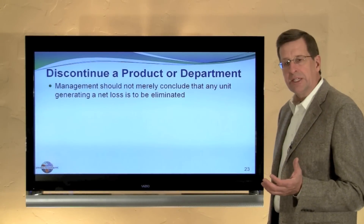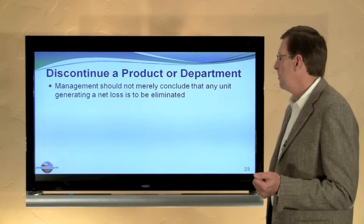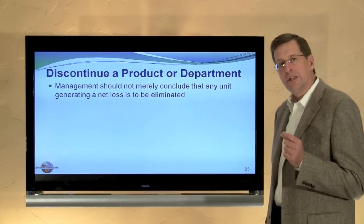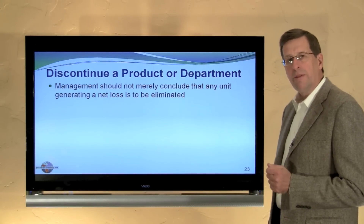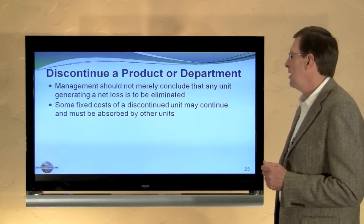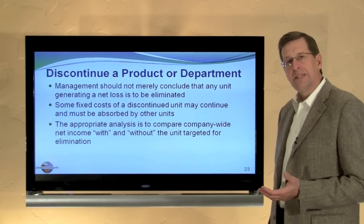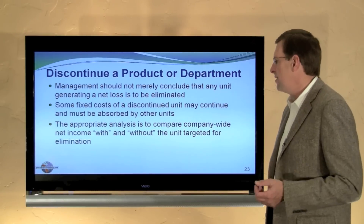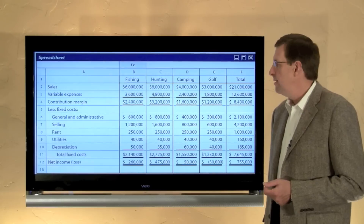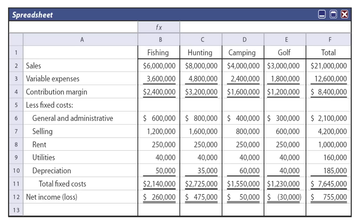Another decision has to do with whether to discontinue a product or department. Management should not jump to the conclusion that every department losing money should be discontinued, as fixed costs may continue. The appropriate analysis is to compare net income with and without the targeted unit for elimination. For example, a retail sporting goods store has four departments: fishing, hunting, camping, and golf. The golf department is losing $30,000. Should we discontinue golf? Maybe we can avoid that loss.